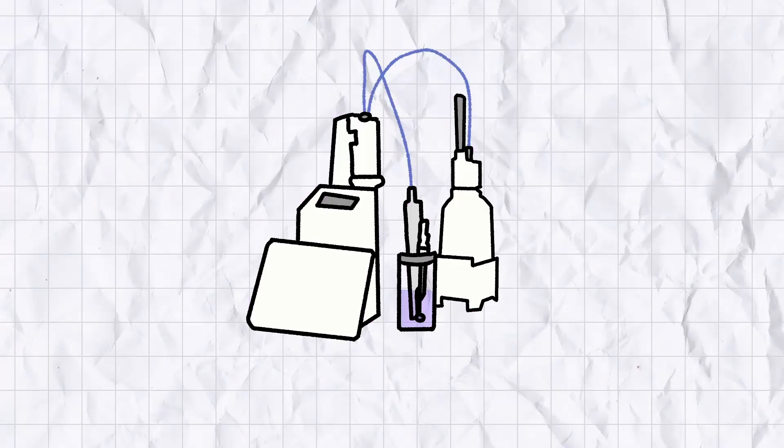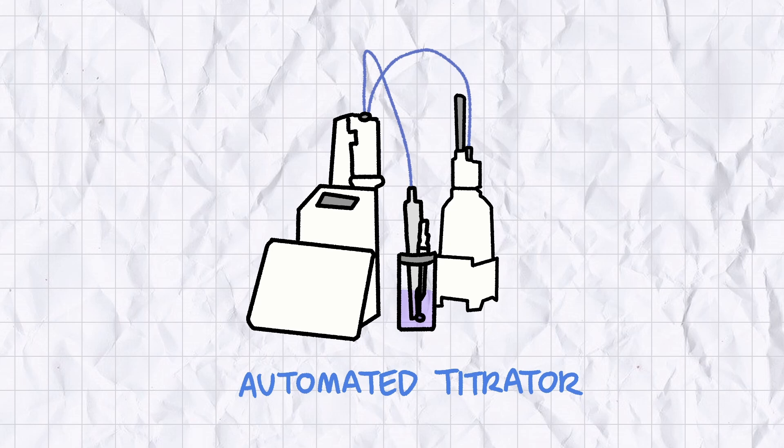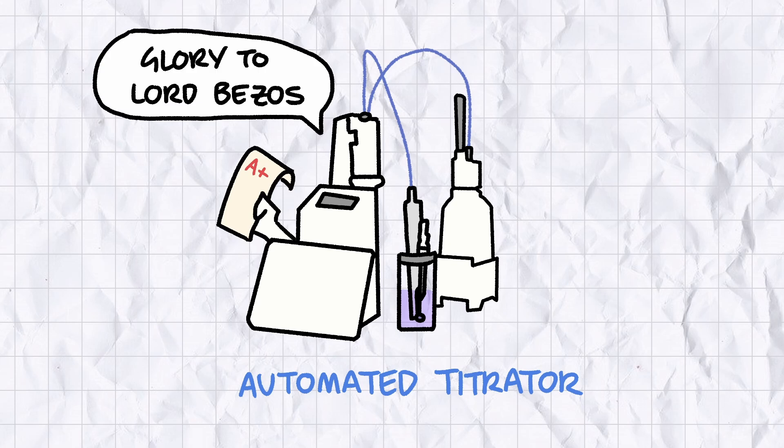These days, most titrations in industry are automated. Robots can measure endpoints far more precisely than humans can, and they're less likely to complain when you don't give them sick pay or bottles to go for a wee in.